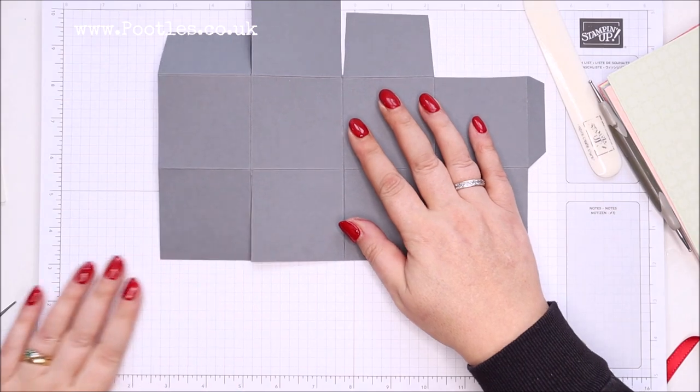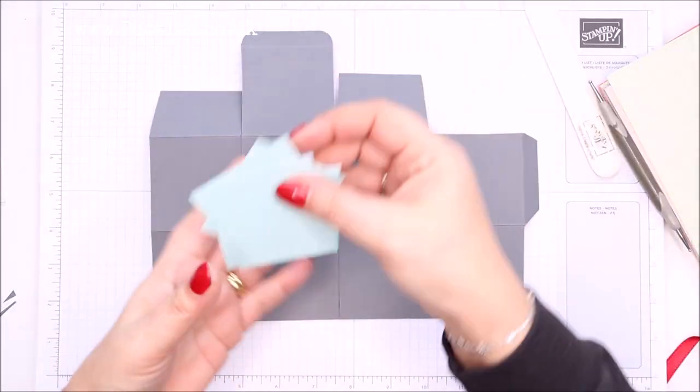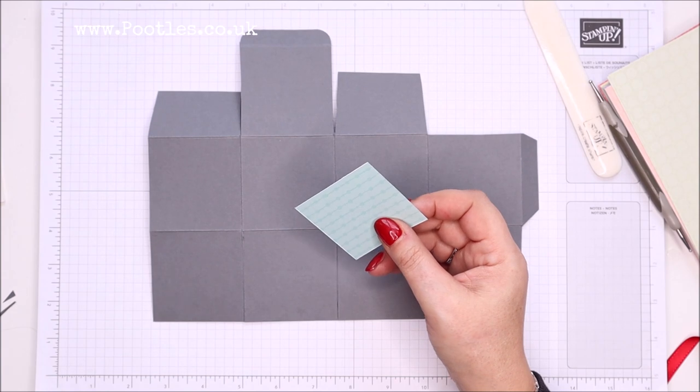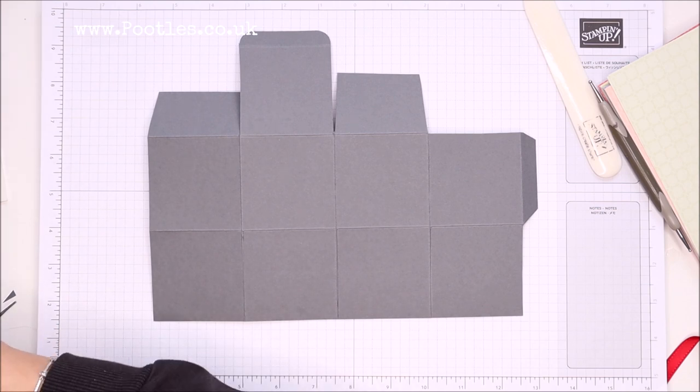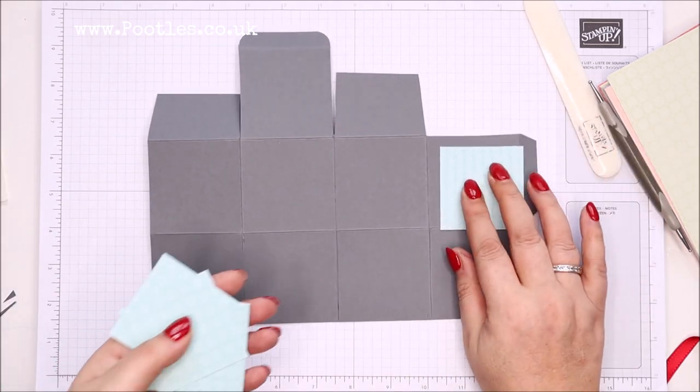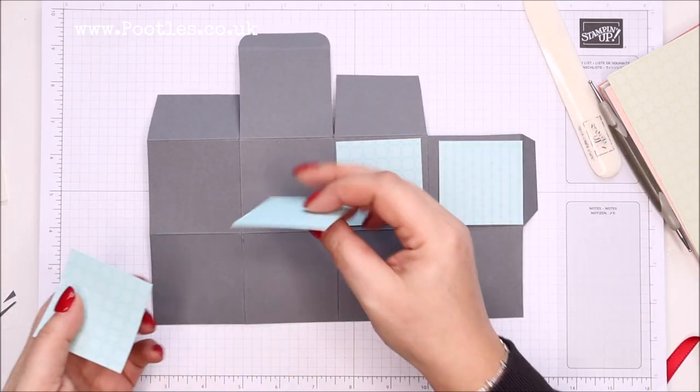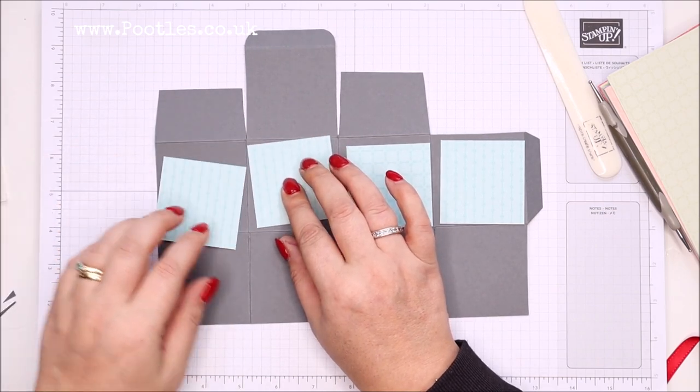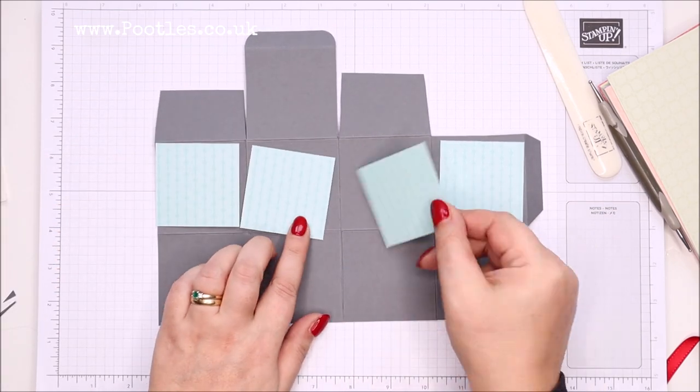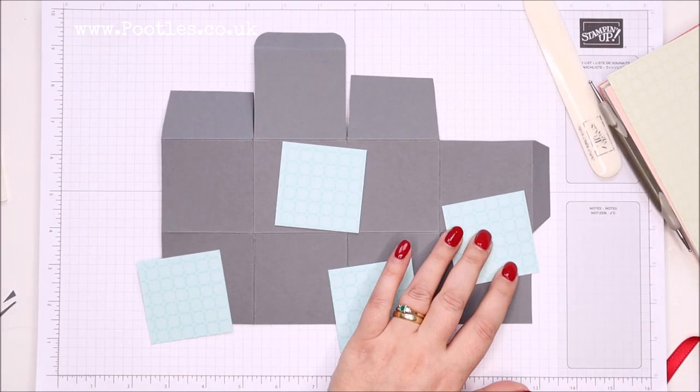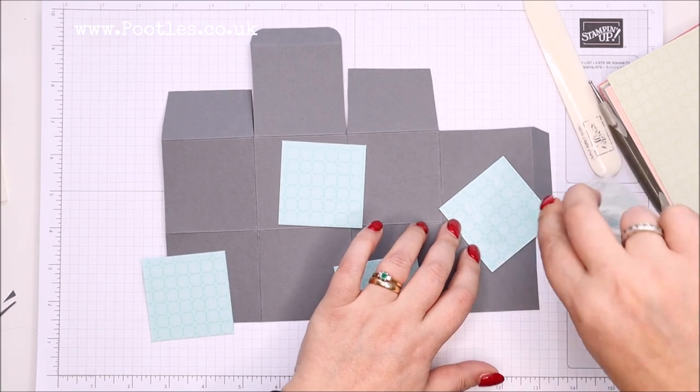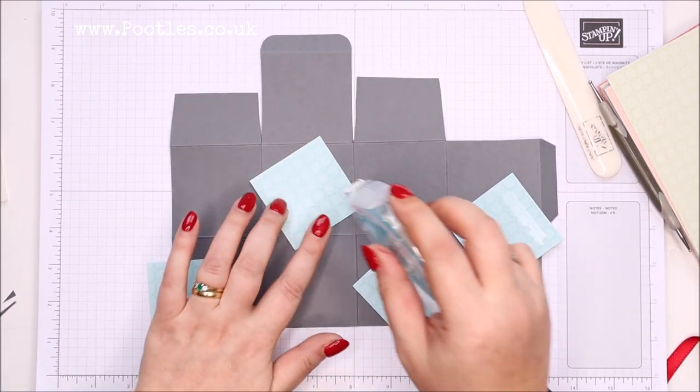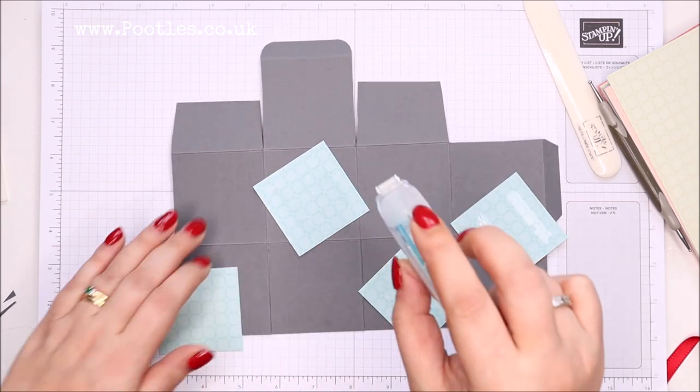Before I stick it together, I'm going to put my panels on. I've got four squares that are two and a quarter by two and a quarter inches, six by six centimeters. I don't know which one I fancy. That one I think. I'm going to have the dots and lines, I'm going to call that the morse code side. Dots and dashes, morse code.